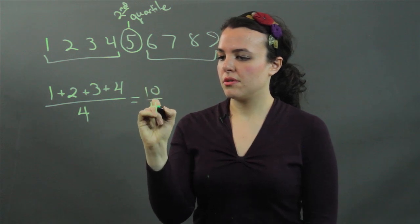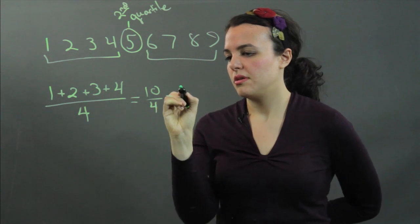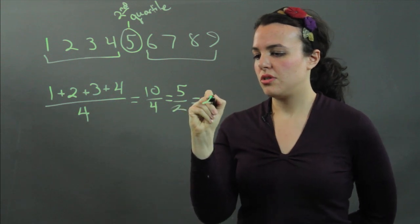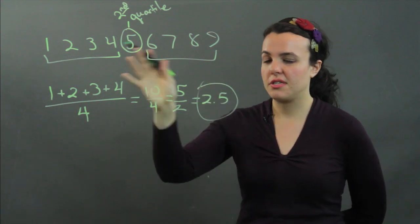10 over 4 simplifies to 5 halves. 5 divided by 2 is 2.5. That is the lower quartile for this set of numbers.